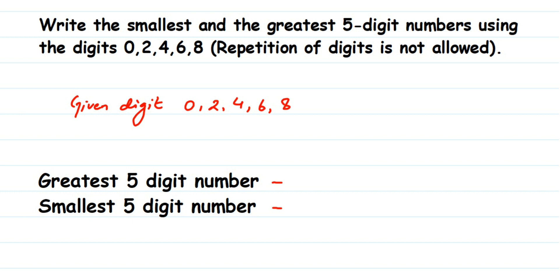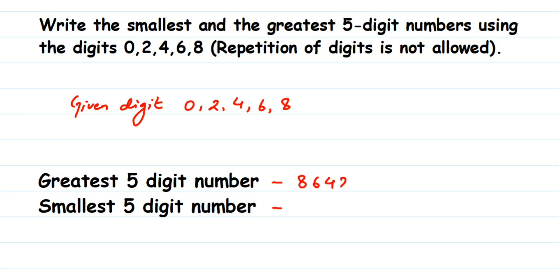To write the greatest five-digit number, write the numbers in descending order — from greatest to smallest. The greatest digit is 8, so we start with 8, then 6, then 4, then 2, and then 0. So 86420 is the greatest five-digit number. It's very simple — just write the numbers in descending order.